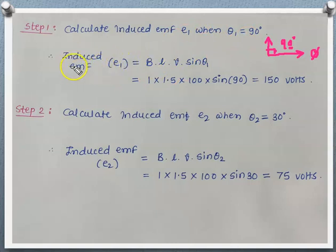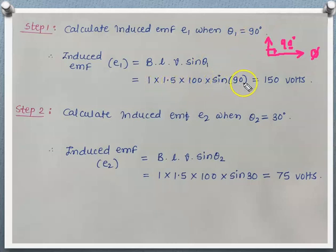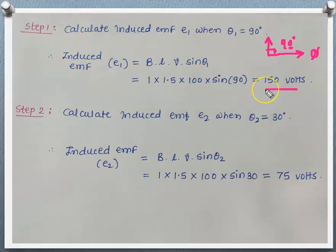We know the expression for dynamically induced EMF is E = B × L × V × sinθ. Substituting values with θ₁: B = 1 tesla, L = 1.5 meters, V = 100 meters per second, sin(90°) = 1. So E₁ = 1 × 1.5 × 100 × 1 = 150 volts. The magnitude of induced EMF for this case is 150 volts.